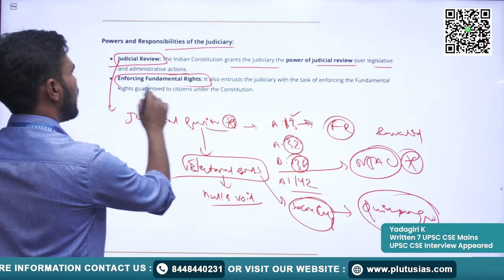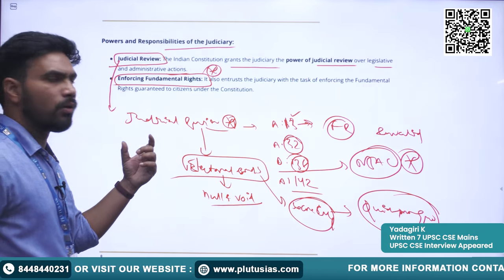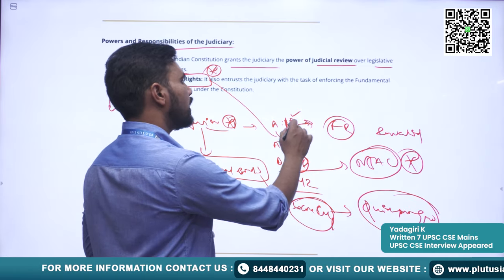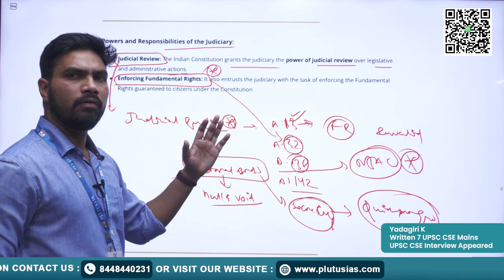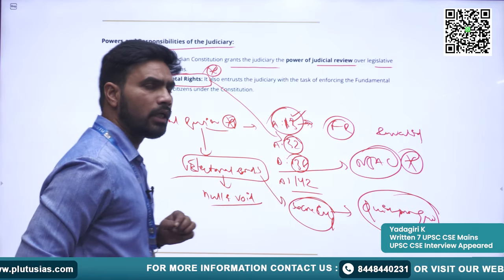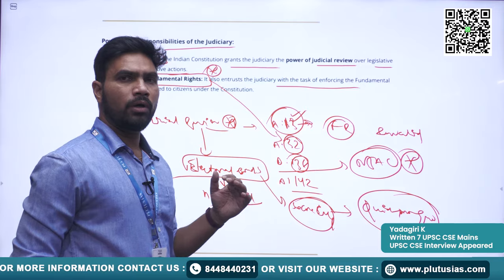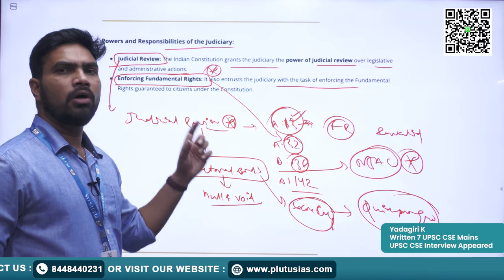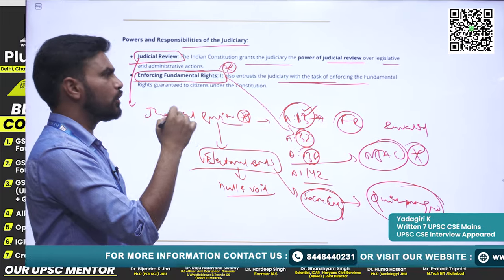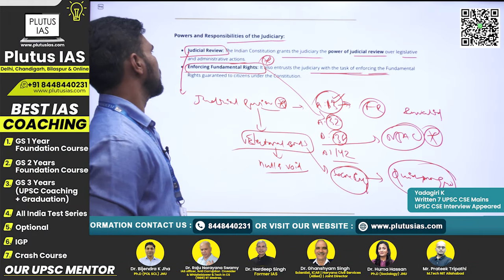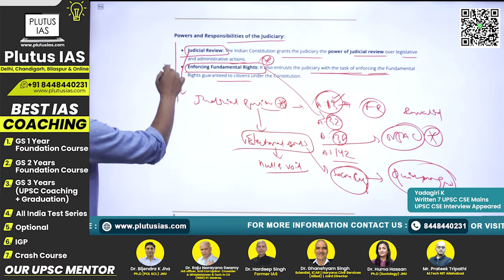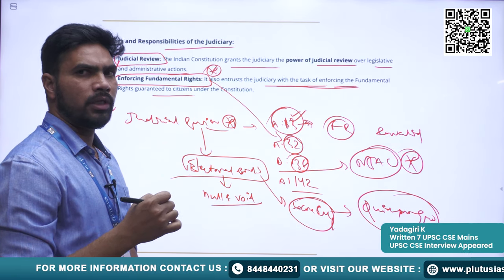Enforcing fundamental rights is another very important role and responsibility of the Supreme Court. Article 32 directly instructs the Supreme Court to protect the fundamental rights of the people of India. Article 13 says that if any action or law of the government violates fundamental rights, it can be declared null and void. In many cases, the Supreme Court has declared many laws null and void because they were violating the fundamental rights of the people.